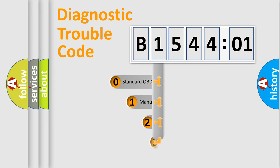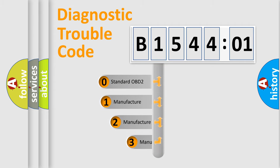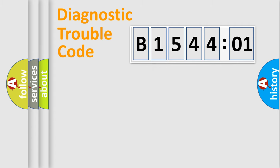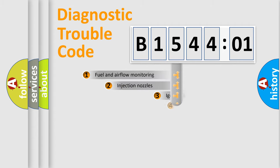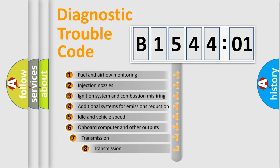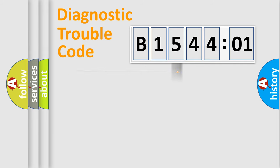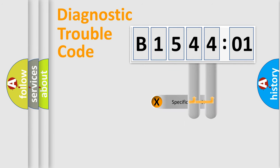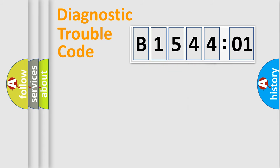This distribution is defined in the first character of the code. If the second character is expressed as zero, it is a standardized error. In the case of numbers 1, 2, or 3, it is a more specific expression of a car-specific error. The third character specifies a subset of errors. The distribution shown is valid only for the standardized DTC code. Only the last two characters define the specific fault of the group.